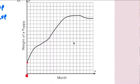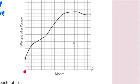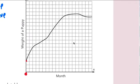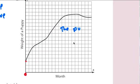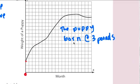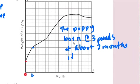Okay, so the puppy is born at about a little bit over three pounds, and two months, at about two months, it gained four more pounds.